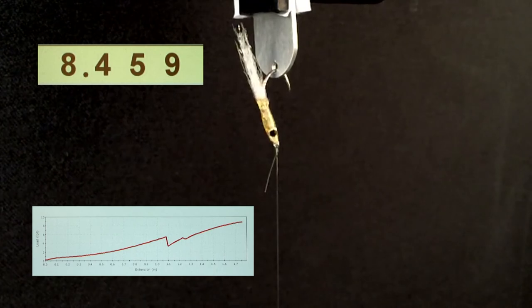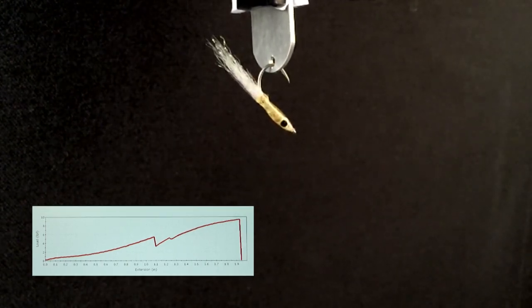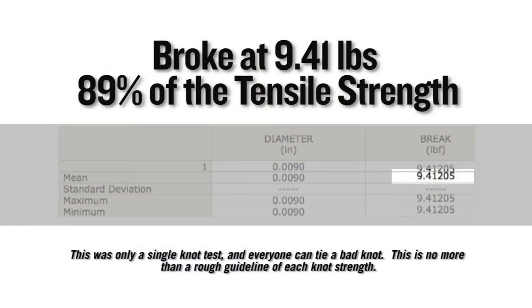On a single Instron test, this knot broke at 9.41 pounds, which equates to 89% of the tensile strength of the nylon it was tied in.